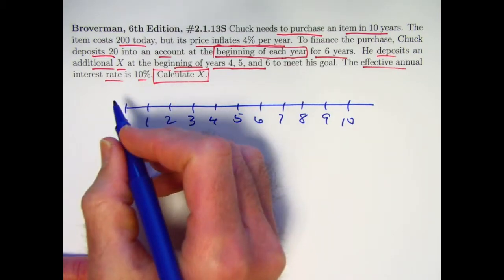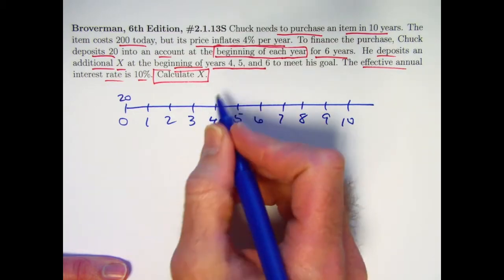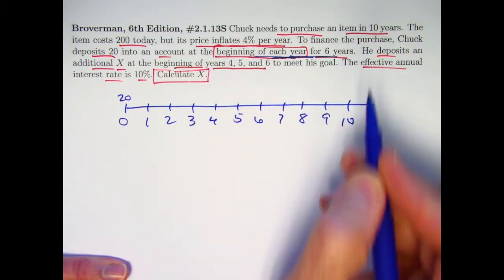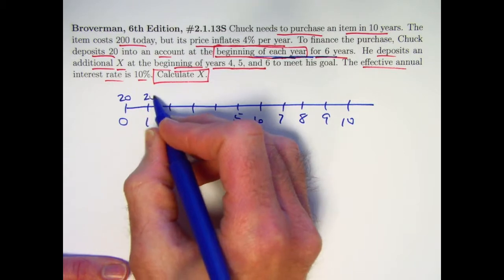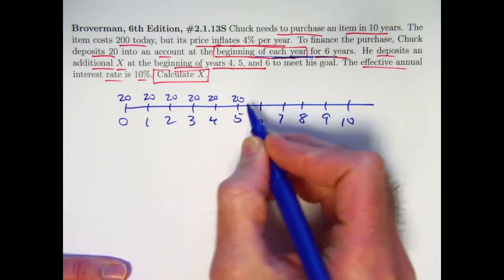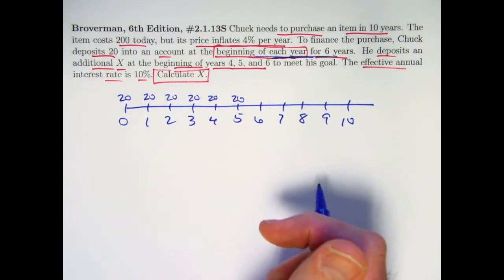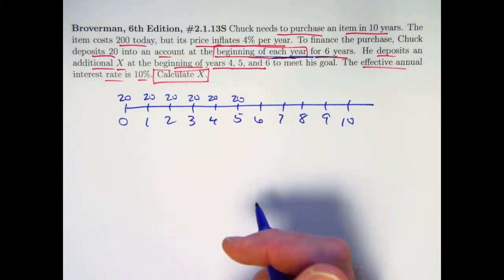So let's see. 20 gets deposited right away at the beginning of the first year. Doing that each year for six years. Here's the second one, here's the third, here's the fourth, here's the fifth. Here's the sixth one at time 5, five years from today. Excuse me, at the beginning of the sixth year. That's his last deposit of 20.